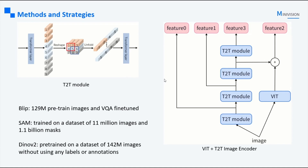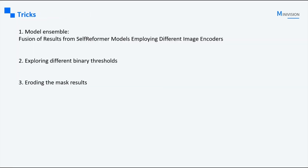The overall structure of the ViT plus T2T image encoder is shown here. In Self-Reformer, the image encoder needs to output four different scale feature maps. We experimented with BLIP encoder, SAM encoder, and DINOv2, as they have undergone extensive training for relevant tasks and will provide better pre-trained weights. For the tricks section, we tried model fusion by combining the outputs of Self-Reformer with different image encoders. We also experimented with different binary thresholds, and finally applied an erosion operation to the mask result.